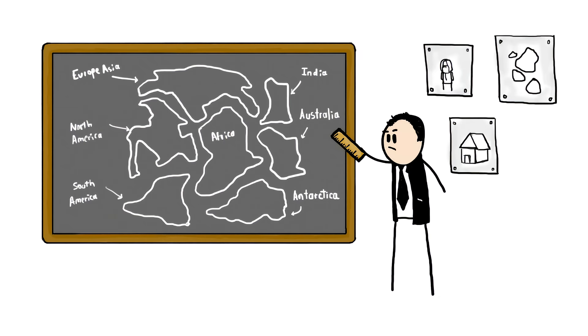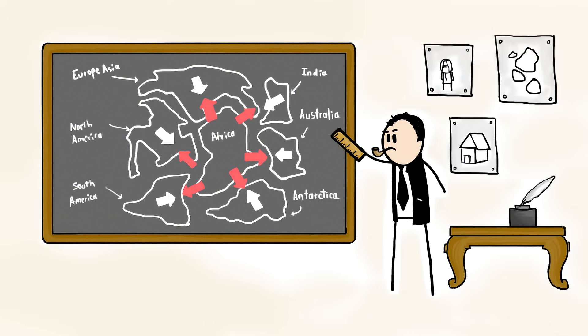The idea that our planet's continents drift around the globe, periodically glomming together and breaking apart, is at least 200 years old.